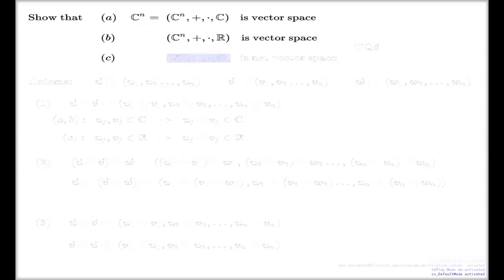And we're also going to discuss why if I take a quadruple like this, now I take the n-tuples of reals, but with a choice for the scalars complex, this is not a vector space.